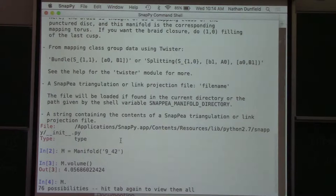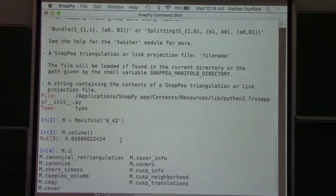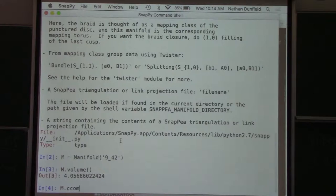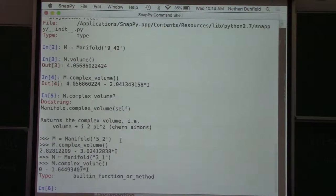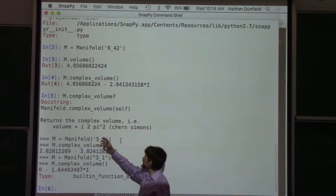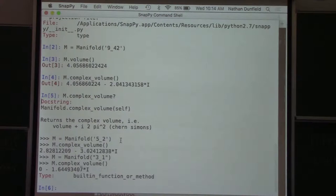Of course, there's any number of other properties of this manifold that are accessible. So the second thing, besides using the question mark, is that you can use tab completion to find out what you might do to this manifold. So if I type M, period, and then hit the tab key, 76 possibilities. Are you sure, Nathan? Maybe I'll just look at the ones that start with C. So here are some things you can do that start with C. You can build some covers. You can compute the complex volume. That sounds cool. Let's do the complex volume. We get this number. What does that mean? We go back to the first thing I told you, which is to use the question mark. And it says the complex volume is the hyperbolic volume plus i times 2 pi squared times the Chern-Simons invariant.